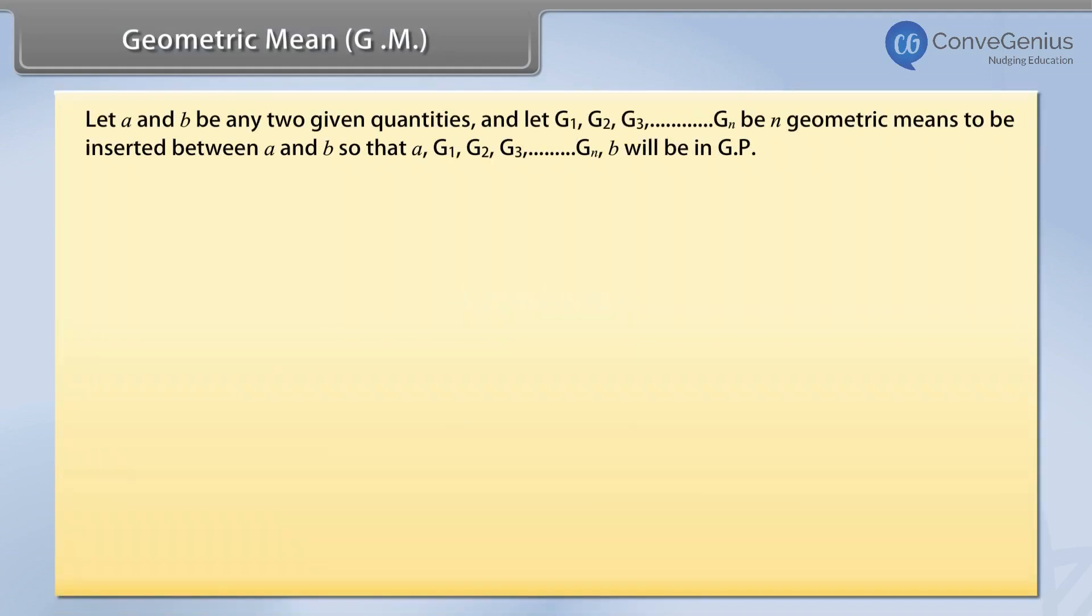Let a and b be any two given quantities, and let g1, g2, g3 up to gn be n geometric means to be inserted between a and b, so that a, g1, g2, g3 up to gn, b will be in GP.